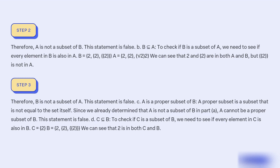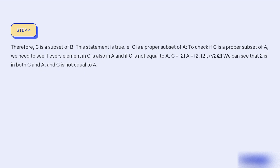To check if C is a subset of B, we need to see if every element in C is also in B. C equals {2} and B equals {2, 2, 2}. We can see that 2 is in both C and B. Therefore, C is a subset of B. This statement is true.